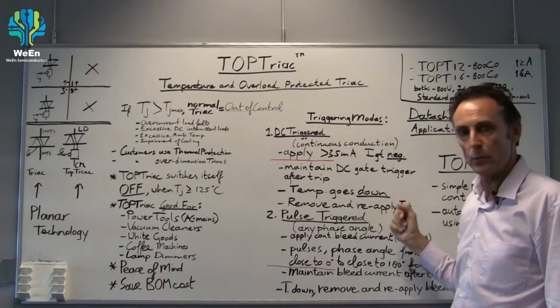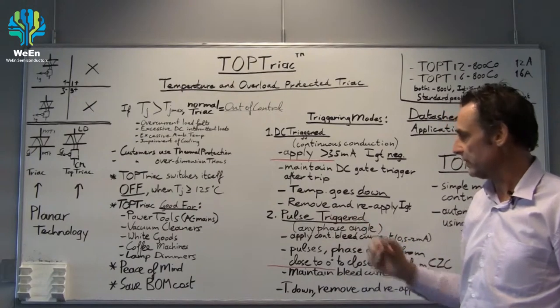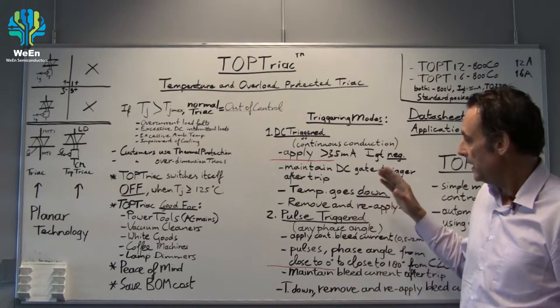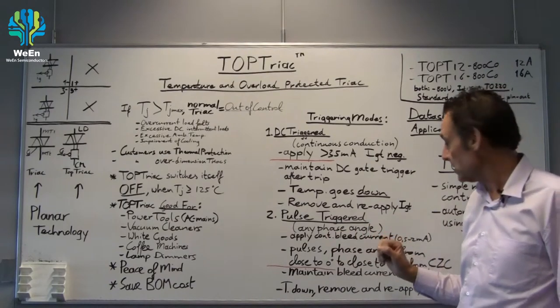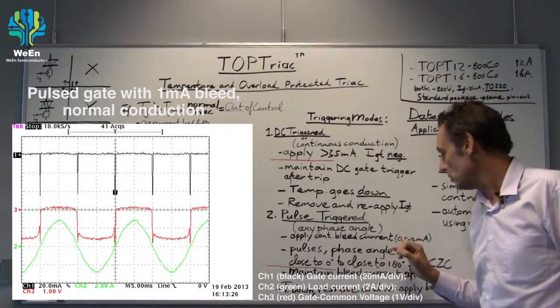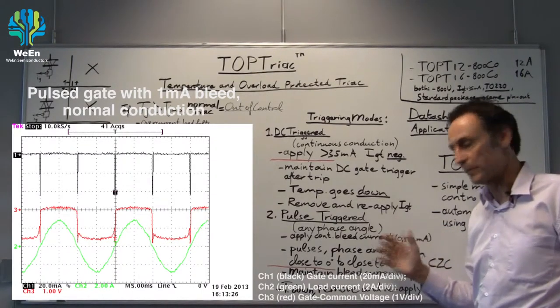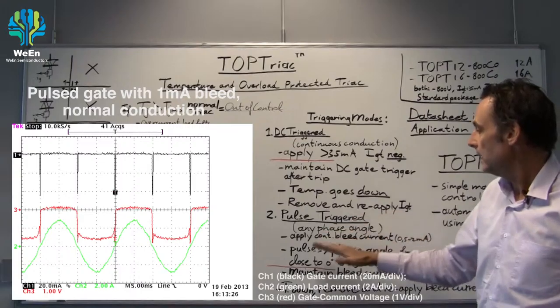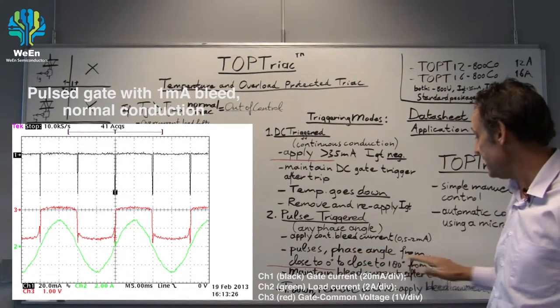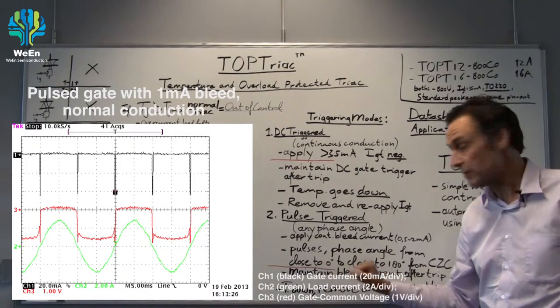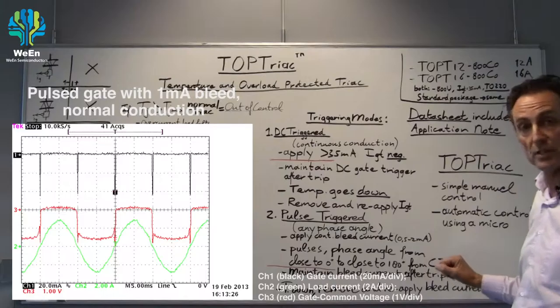Pulse triggering we do if we want to do power control so we can make phase angles. In this case we have to apply a continuous bleed current drawing 0.5 to 2 milliamps from the gate. The TRIAC is on, we use pulses, we can make phase angles from close to 0 degrees to close to 180 degrees from current zero crossing.